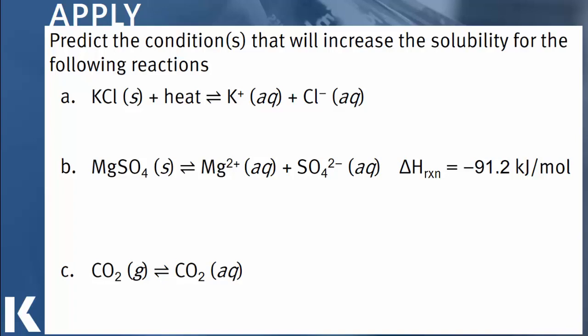The reaction in Part A describes the dissolution of potassium chloride into potassium ions and chloride ions. The reaction is endothermic, as indicated by the heat on the reactant side. Therefore, increasing the temperature of the system will shift it away from the heat and favor the formation of the potassium and chloride ions.